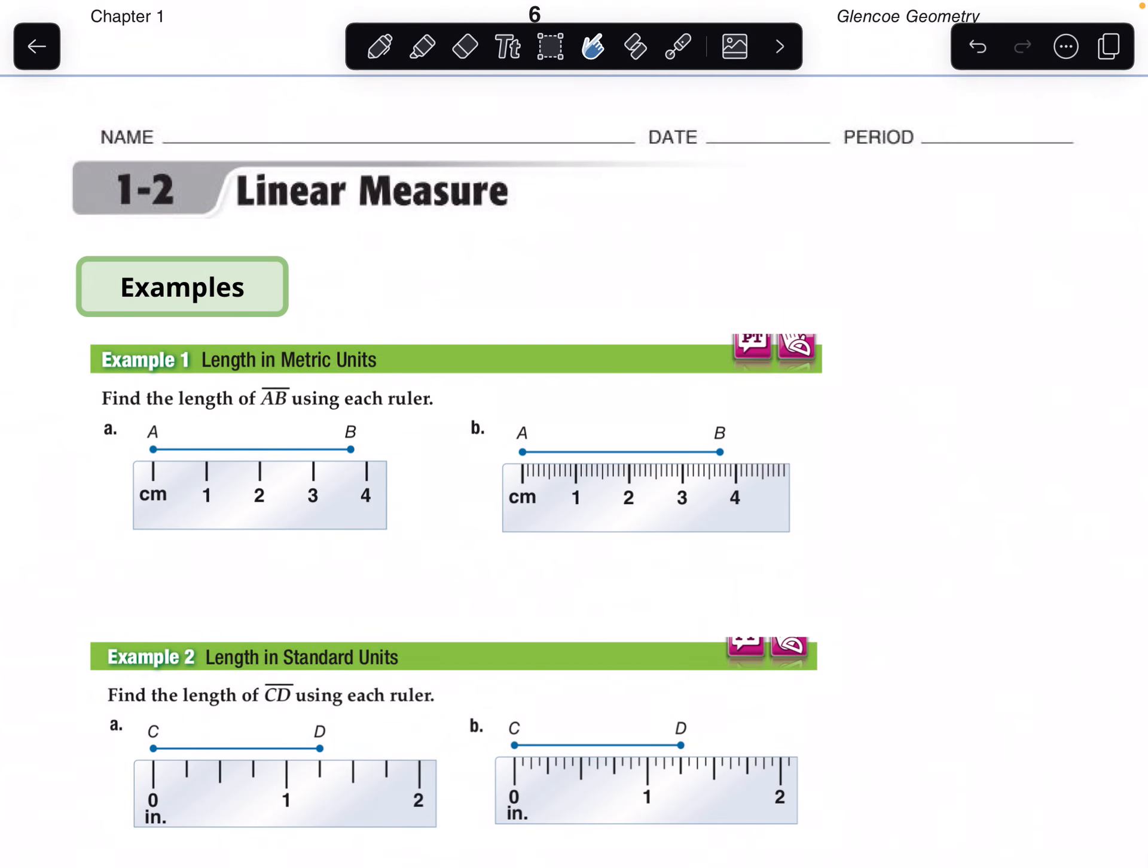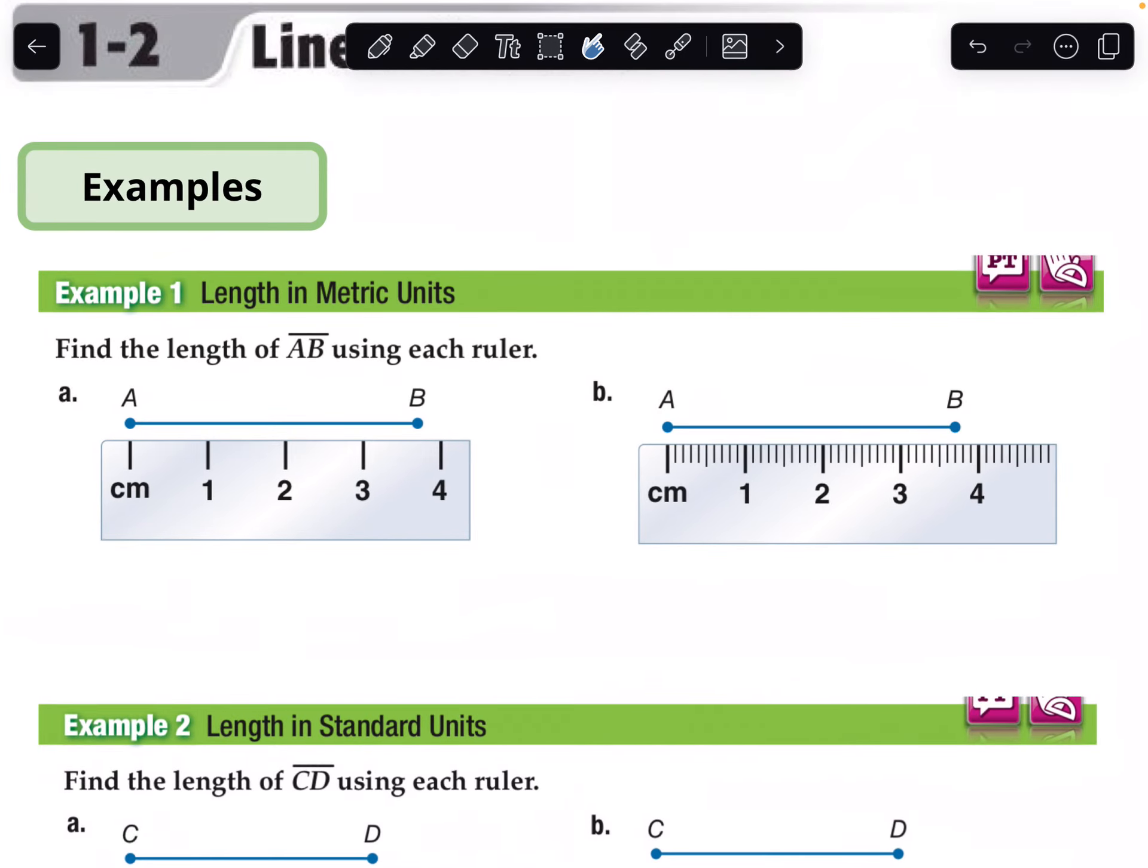Hello and welcome back to part 2 of section 1-2 of geometry. Now let's complete the example problems together. Example 1, length in metric units. Find the length of segment AB using each ruler.